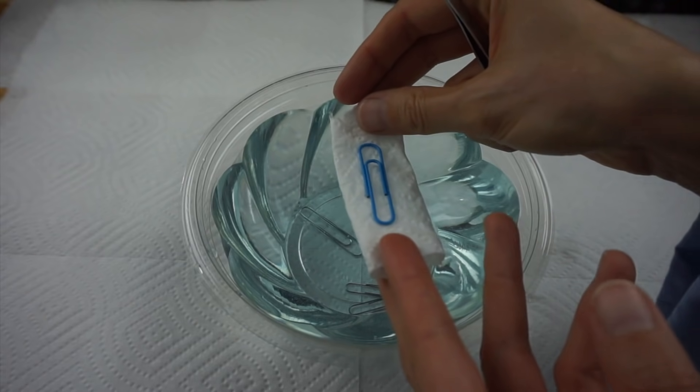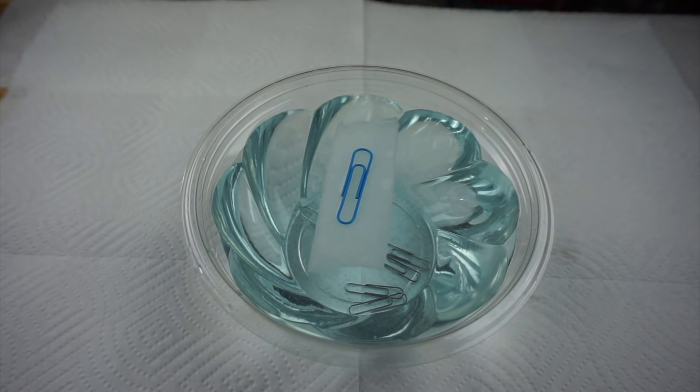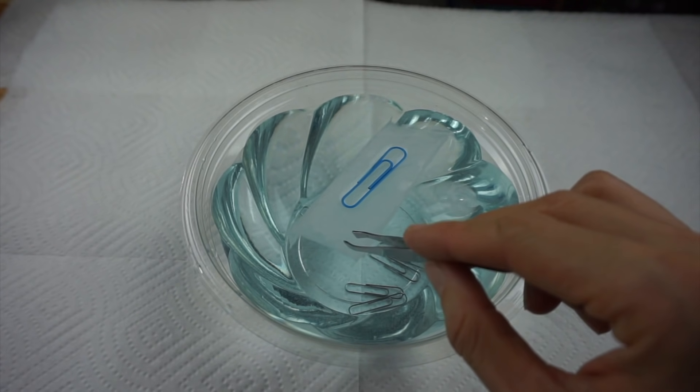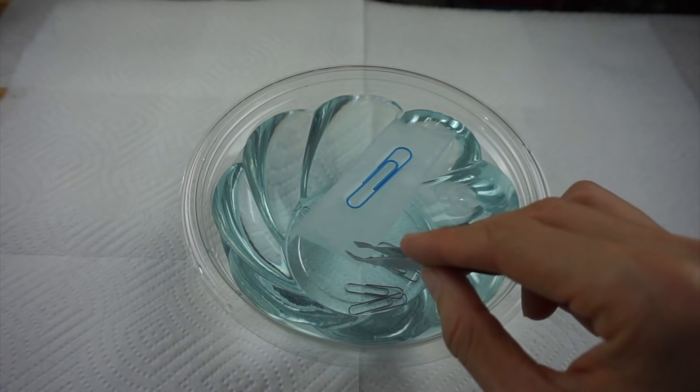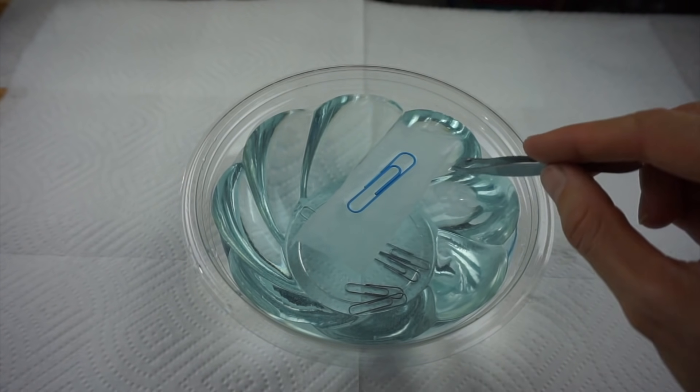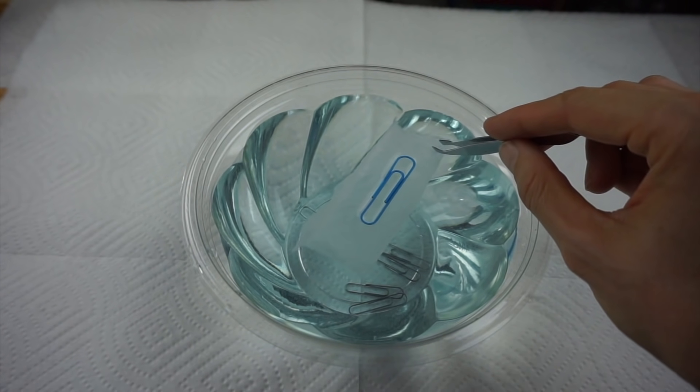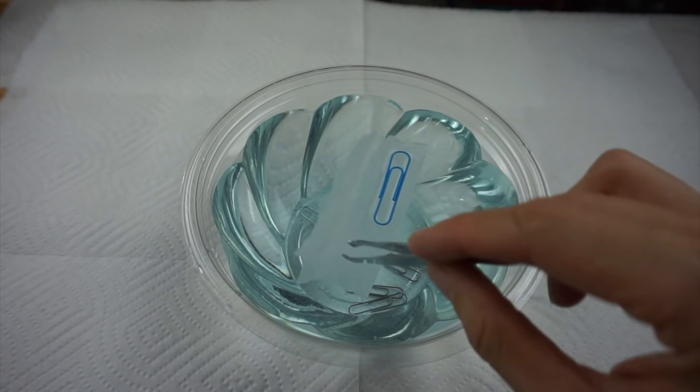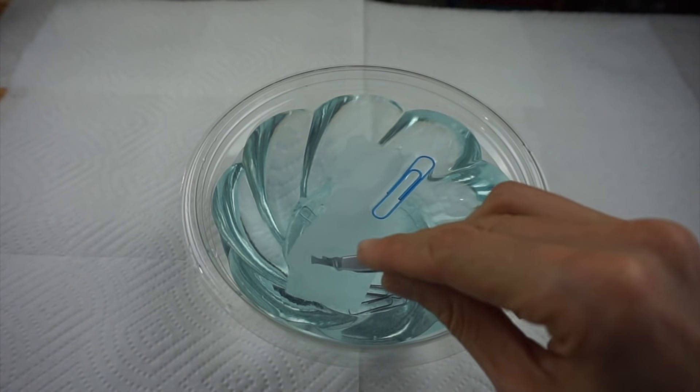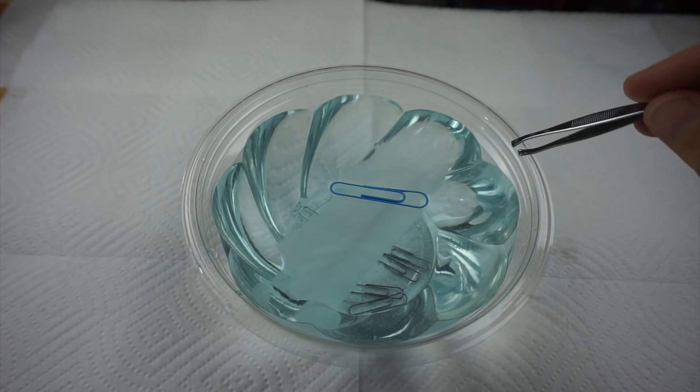But if I put the paper clip on a paper towel and lay the paper towel on the water, that helps the paper clip to go onto the surface perfectly even and flat. Then the paper towel will sink and you'll have a floating paper clip. If you don't want to wait for the paper towel to sink on its own, you can push it down with your finger or tweezers or a pencil. Reaching into the water won't disturb the surface tension as long as you don't have soapy fingers.